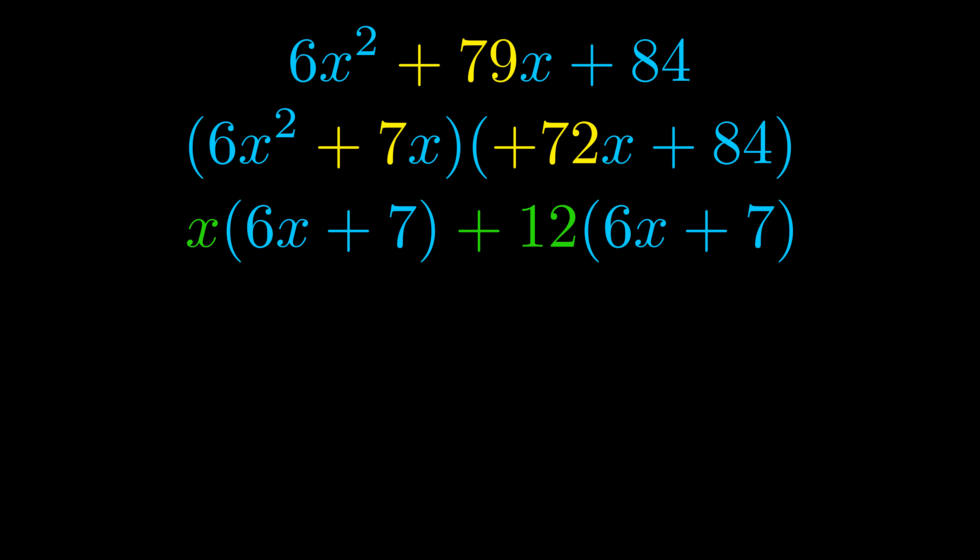Notice also how what remains inside of the parentheses is the same in both cases. The blue values are the same. Those blue values will become one of our factors, and we will combine the two green values, the GCFs that we pulled out, to get the other one. And that is our fully factored equation.